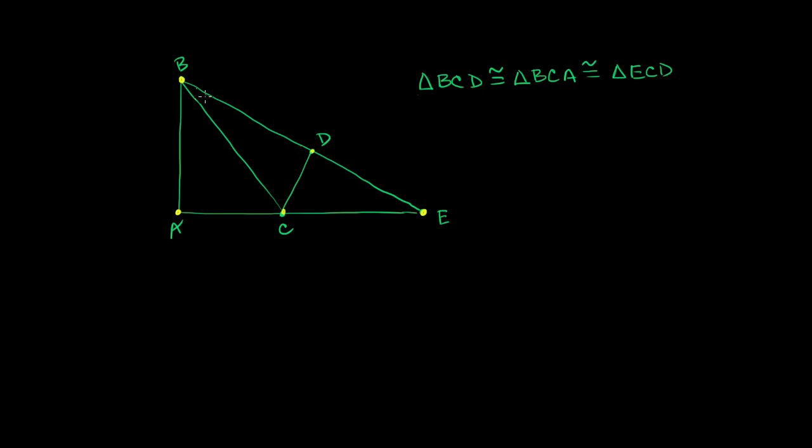So we have this larger triangle here, and inside of that we have these other triangles. And we're given this information right over here, that triangle BCD is congruent to triangle BCA, which is congruent to triangle ECD. And given just this information, what I want to do in this drawing is figure out what every angle is. What's the measure of every angle?